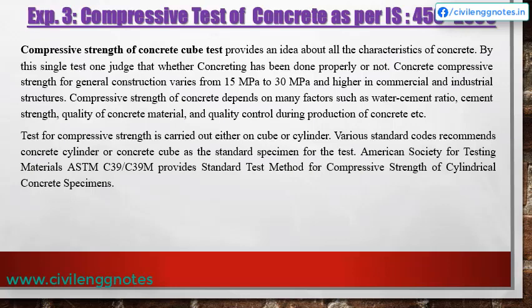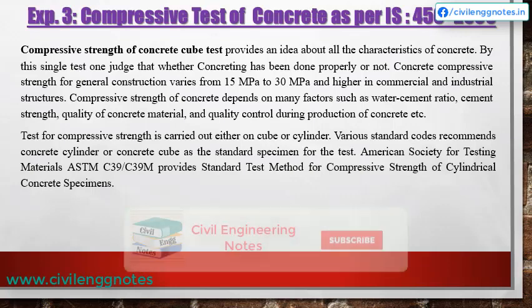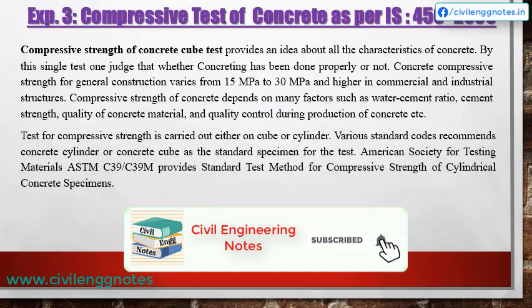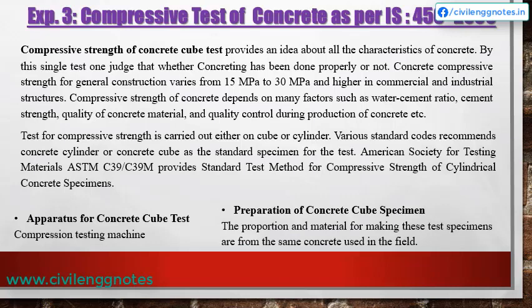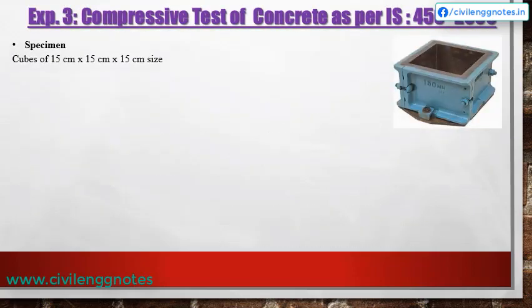The test is carried out on either a cube or cylinder. Various standard codes recommend these as standard specimens. ASTM C39 provides the standard test method for compressive strength of cylindrical concrete specimens. For the concrete cube test, a compression testing machine is needed. The proportion and material for making test specimens are from the same concrete used in the field, using cubes of size 15 cm × 15 cm × 15 cm.